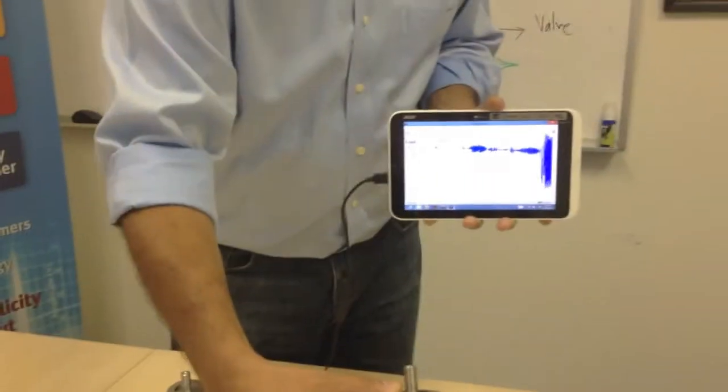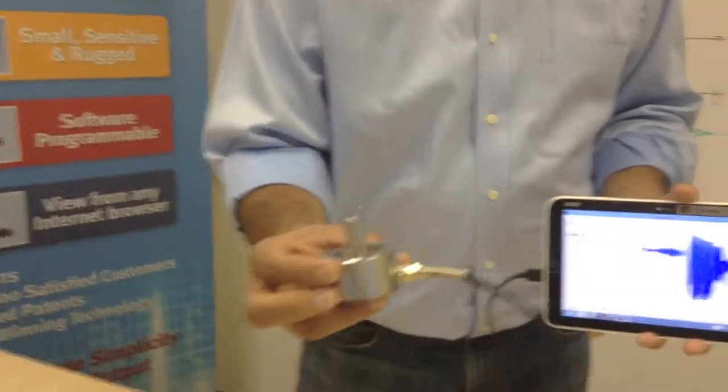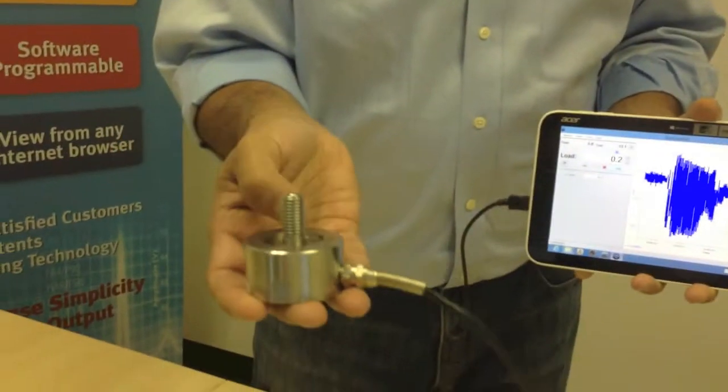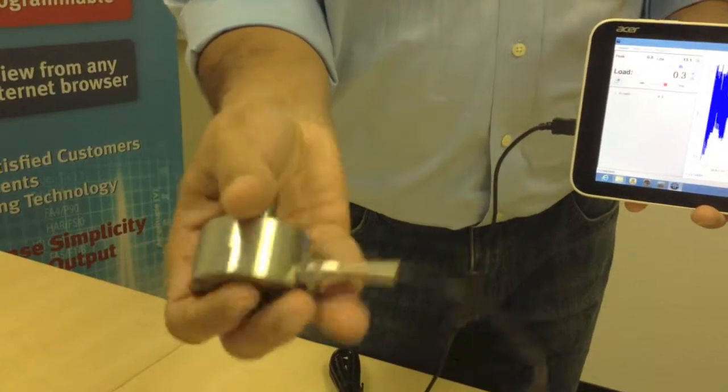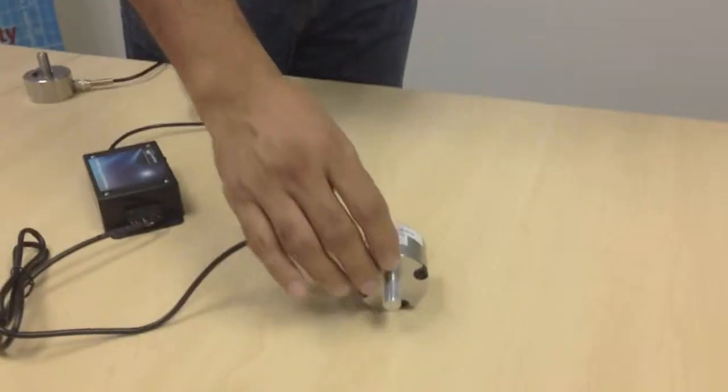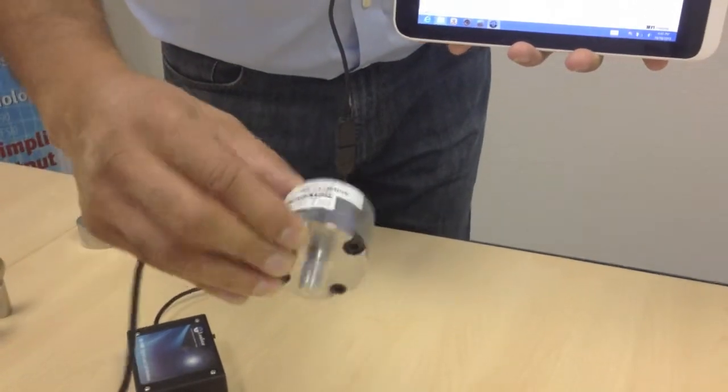This is our RSP3 load cell. The load cell itself looks like this. It's got threaded stud on top as well as threaded holes on the bottom, but in this configuration here we have added a tension adapter so you have a symmetrical looking sensor on the top and bottom.